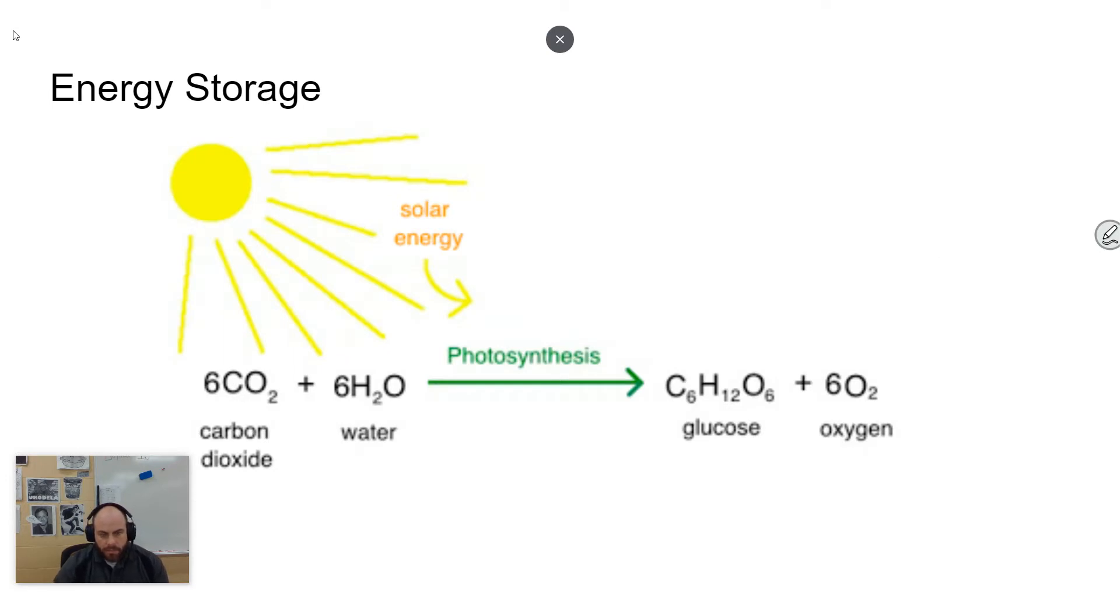With photosynthesis, it has to do with the idea of energy storage. Organisms are able to capture and store energy and use the energy for biological processes. Here you have the chemical equation for photosynthesis: You have carbon dioxide and water, and they make glucose and oxygen. Oxygen is a byproduct of this reaction. Glucose is the main idea here, and this happens with the input of solar energy. The idea is that solar energy is converted into chemical energy in the form of glucose.